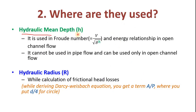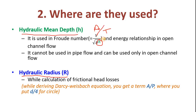Now where are they used — hydraulic mean depth and hydraulic radius? Hydraulic mean depth is used in the Froude number, where the Froude number equals V divided by the square root of G times H, and this H means hydraulic mean depth, which is area divided by top width.